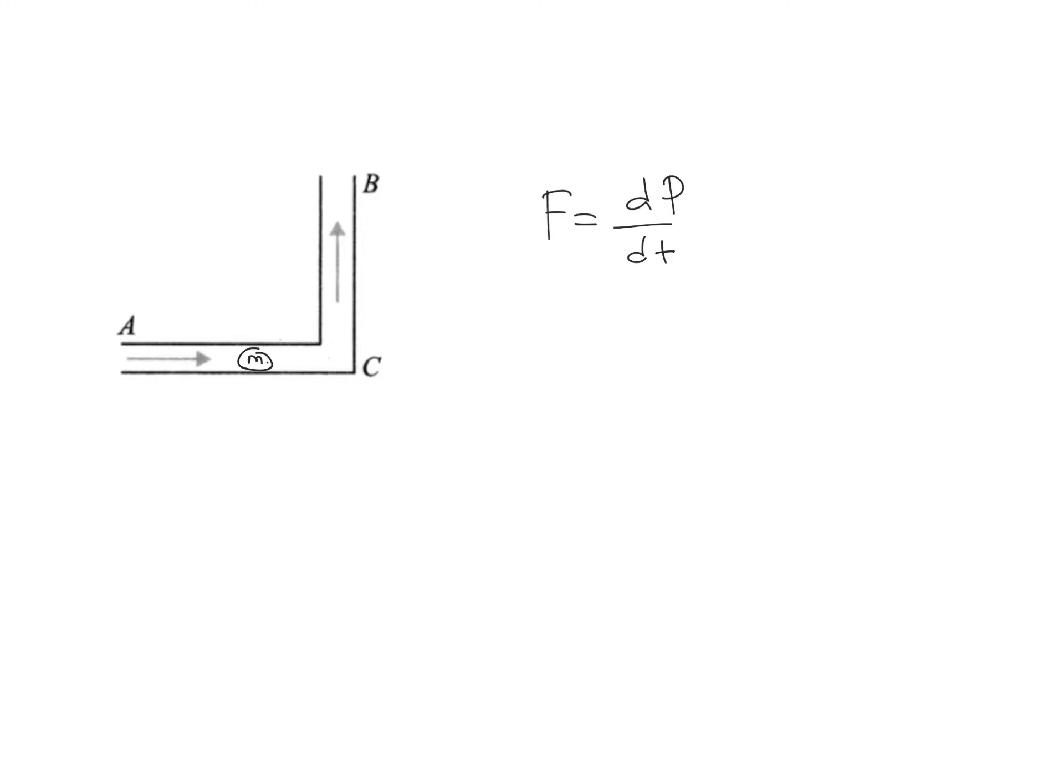Let's say mass m of gas is flowing with velocity V. Now its velocity is changed along this direction, so we can find the value of change in momentum.